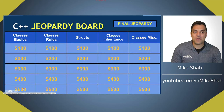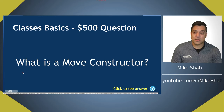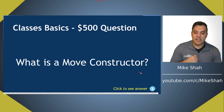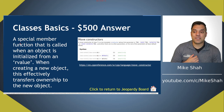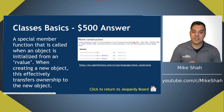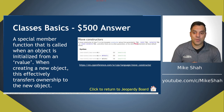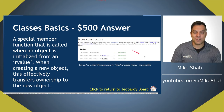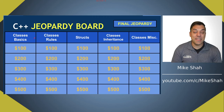For the $500 question: what is a move constructor? A move constructor is a special member function that's called when an object is initialized from an r-value. This is effectively transferring ownership to the new object as we are constructing it. You can see how we define this with the two ampersands to get an r-value reference — something we want to transfer ownership of.